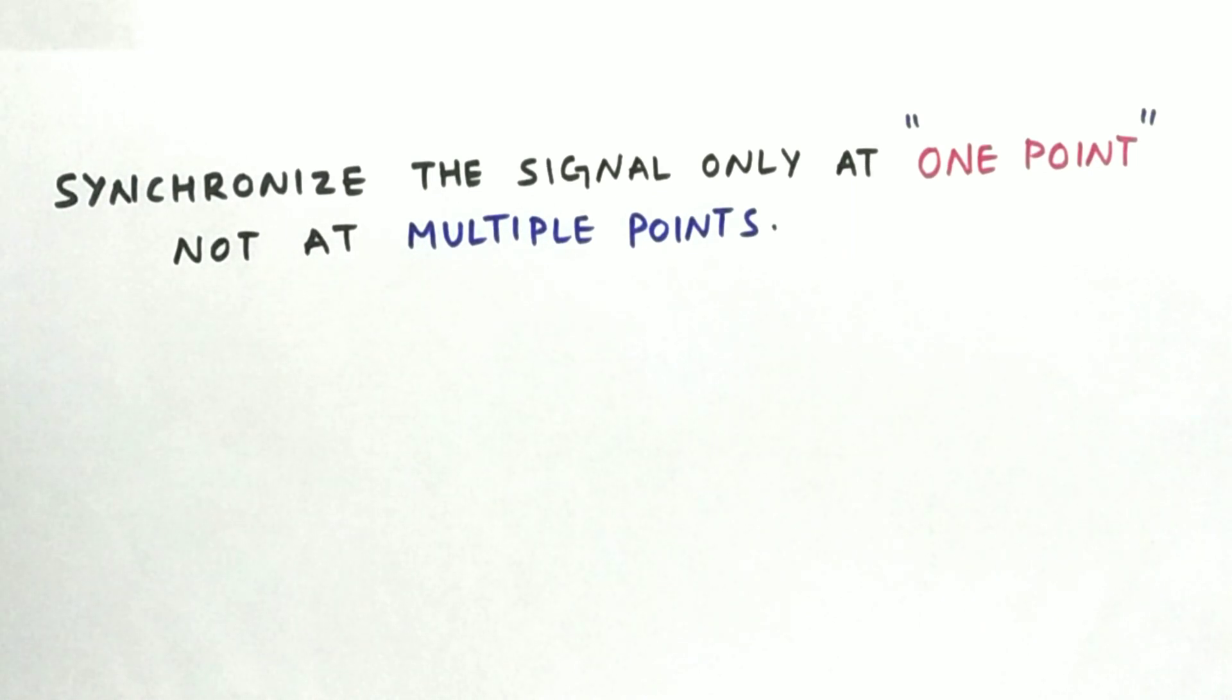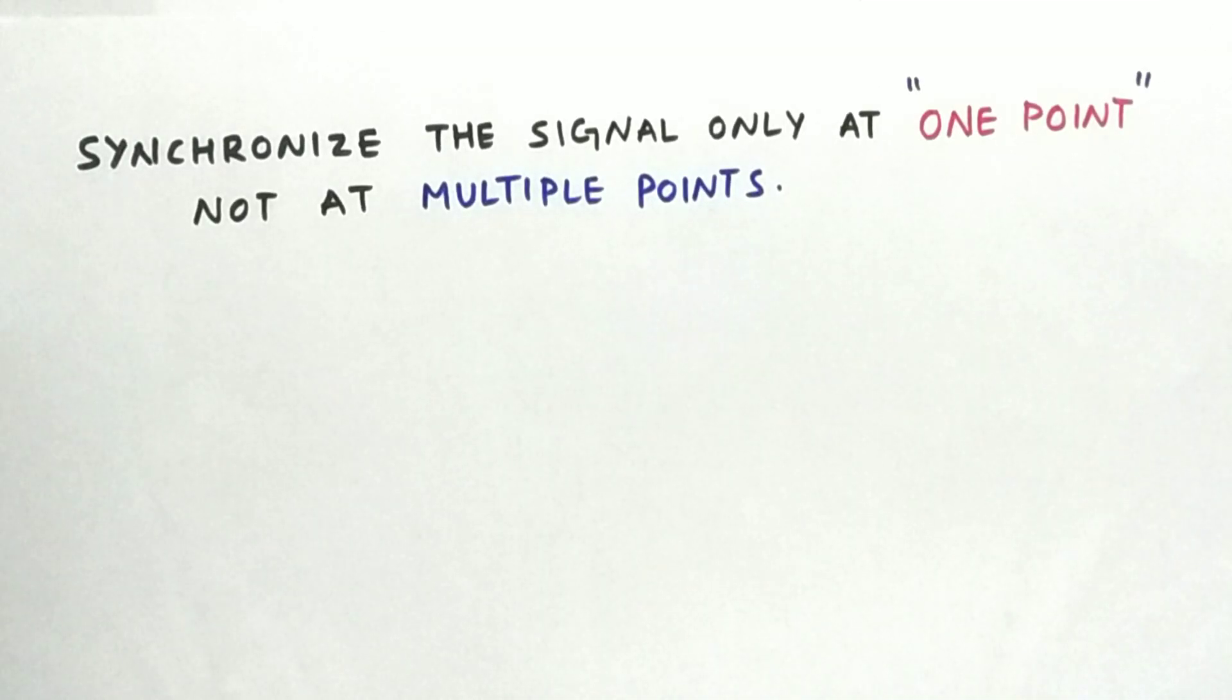Rule two is synchronize the signal only at one point and not at multiple points. When signals are synchronized at multiple points, the synchronized value may change and this will result in improper function. So we must synchronize a signal at one point since the values can vary from one synchronization output to another synchronization output. We must take care that the signal is synchronized at only single point and take that point for our necessary requirements.